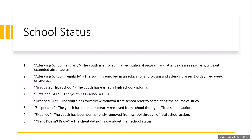School status categories listed within HMIS data elements include: attending school regularly, attending school irregularly, graduated high school, obtained GED, dropped out, suspended, expelled, and client doesn't know. There are definitions to all of these statuses so you can help determine the best answer for each individual youth you're serving.